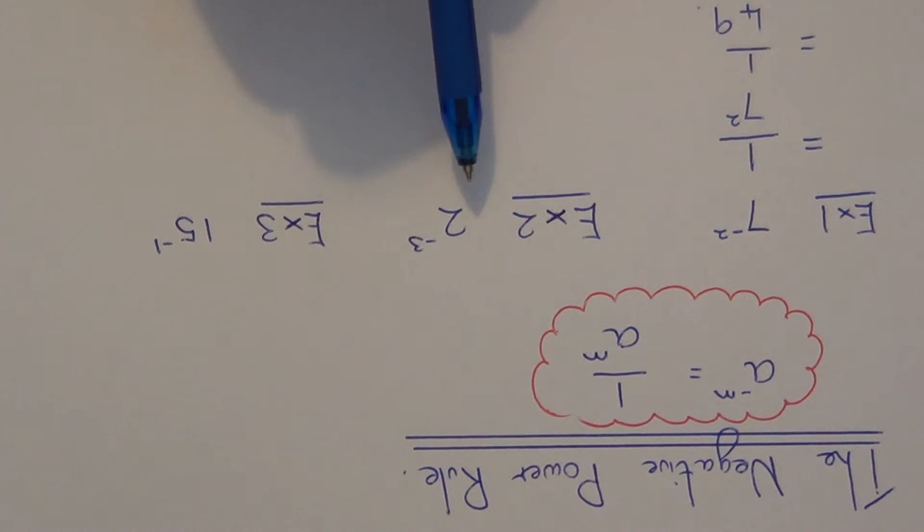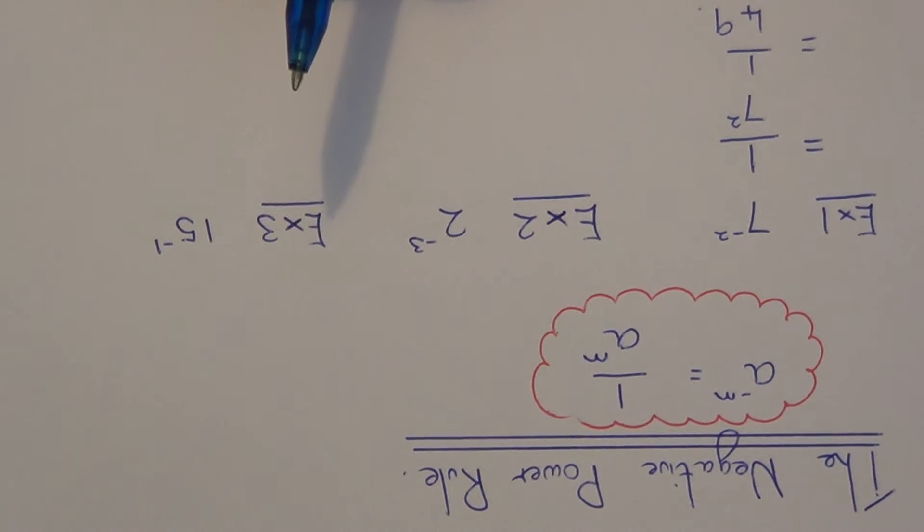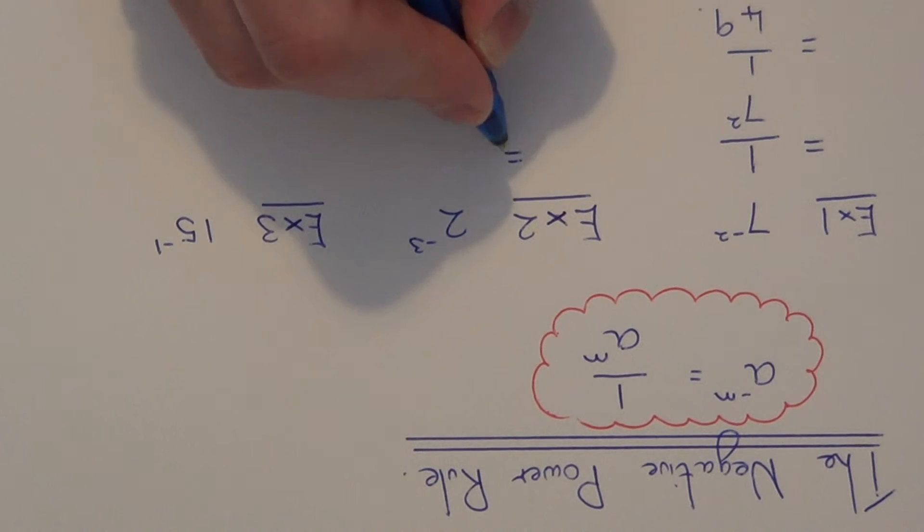Let's do example 2. So this time we have 2 to the power of minus 3. So again all you need to do is put 1 on the numerator and write 2 cubed on the denominator.